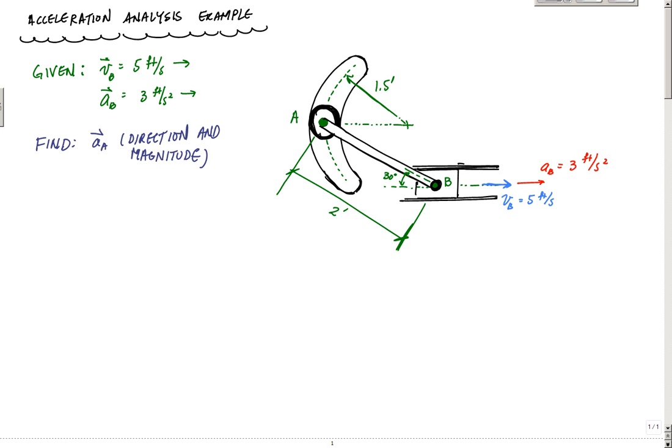What we want to find is the acceleration of A. We want to describe the vector, so that means two things: the direction and the magnitude. So let's get it on.